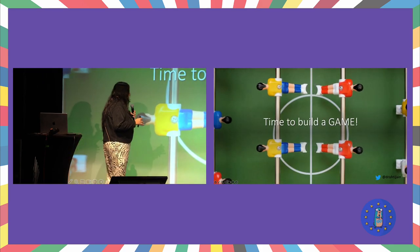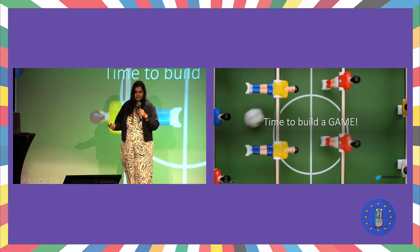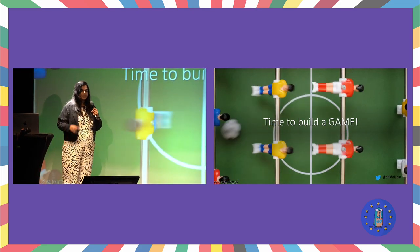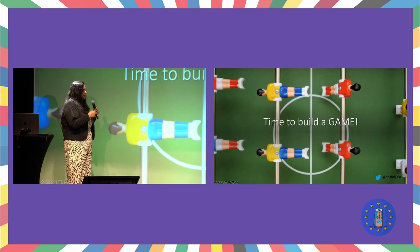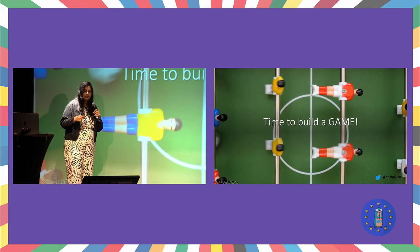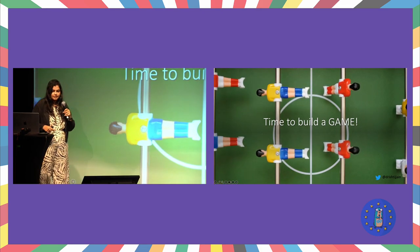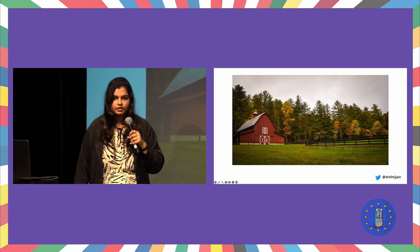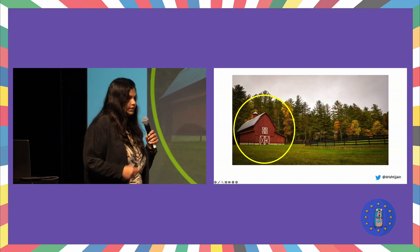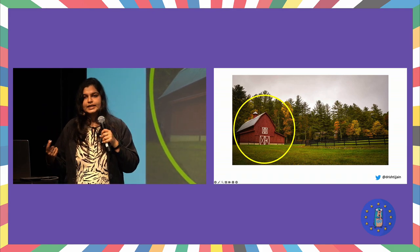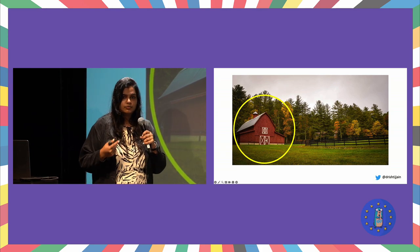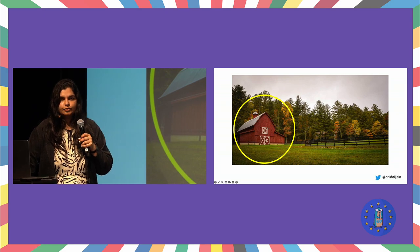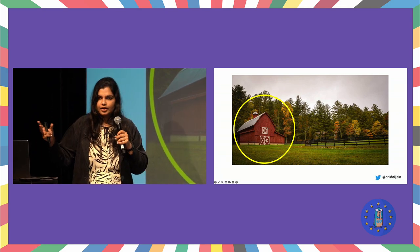Now that we've seen different libraries and how to build complex components, let's look at building a game. A game doesn't just mean competing — it can have a different use case. Say I have an image and I want my game to focus on a specific part of it rather than the whole image. Think of it as a zoom feature — part of a bigger game where you interact with something. Let me show you what the initial and final images would look like before going into code.